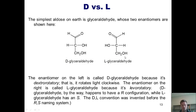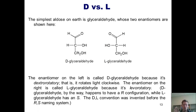I'll now introduce you to a special concept called D and L notation, which requires some background. The simplest aldose on Earth is glyceraldehyde, whose two enantiomers are shown here as Fischer projections instead of the traditional wedge and dash structures. The enantiomer on the left is called D-glyceraldehyde, because it happens to be dextrorotatory — that is, it rotates plane polarized light clockwise. The enantiomer on the right is called L-glyceraldehyde, because it happens to be levorotatory — that is, it rotates plane polarized light counterclockwise.